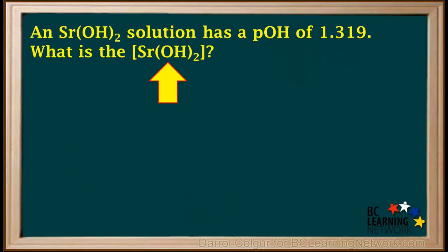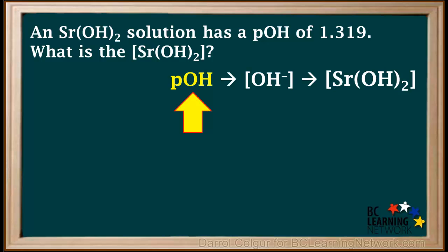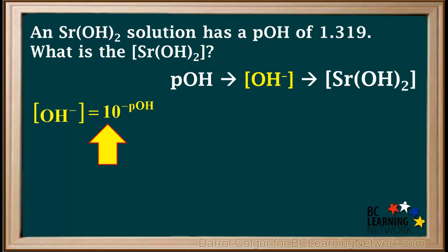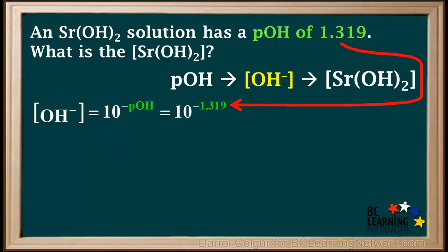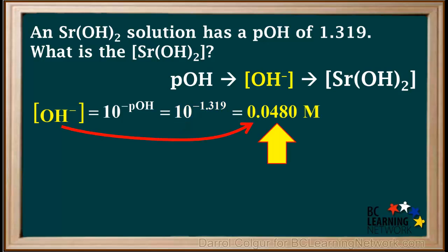Here's another example. We're given that the pOH of a solution of strontium hydroxide is 1.319, and we're asked to find the concentration of strontium hydroxide as a whole. Pause the video and try this on your own first, then resume to check your answer. We start with the given pOH and convert it to hydroxide ion concentration. Using the formula: concentration of OH⁻ equals 10 to the negative pOH, we substitute 1.319. So the hydroxide ion concentration is 10 to the negative 1.319, which is 0.0480 molar — three significant figures, like the pOH value of 1.319.